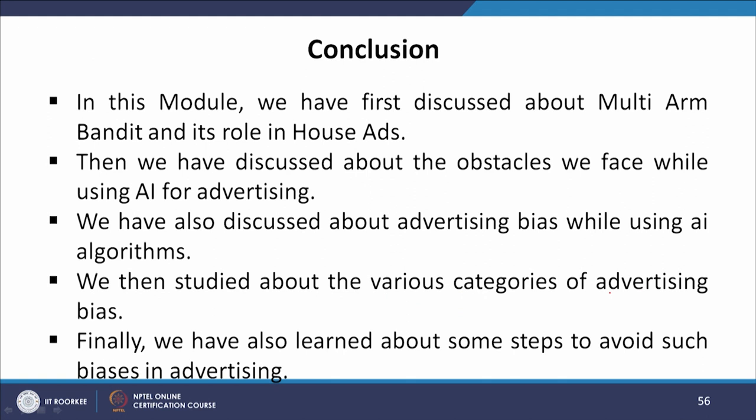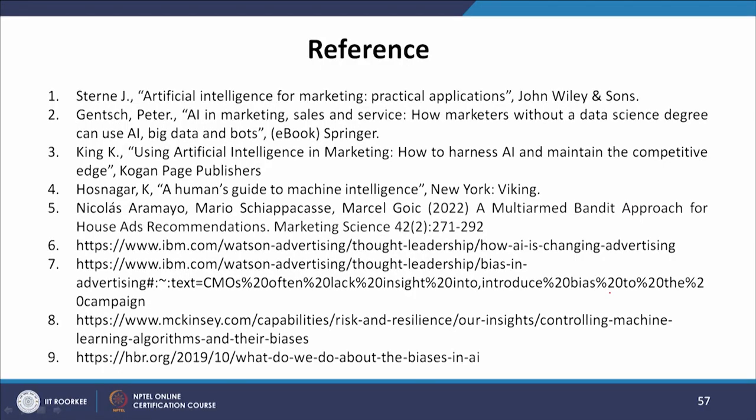To conclude, in this module we have first discussed about multi-armed bandits and their role in house ads. Then we discussed the obstacles we face while using AI for advertising, advertising biases while using AI algorithms, the various categories of advertising biases, and finally some steps to avoid such biases in advertising. These are the nine sources from which the material for this module was taken. Thank you.